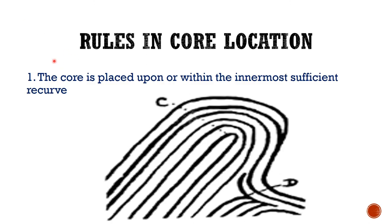Now we move on to the rules in core location. Rule number one: the core is placed upon or within the innermost sufficient recurve. So among the recurves shown, the core is placed at the innermost sufficient recurve.